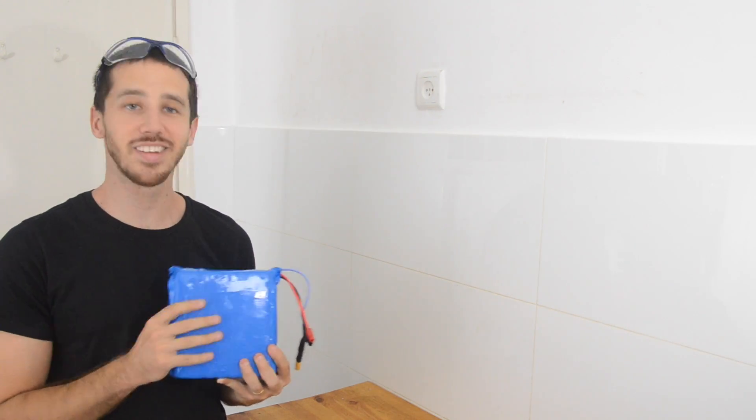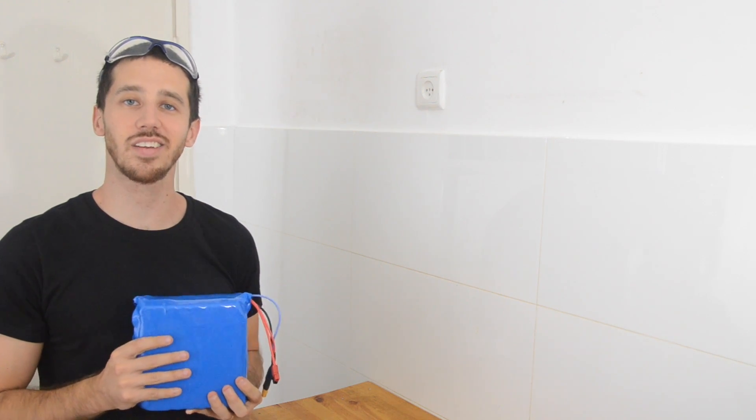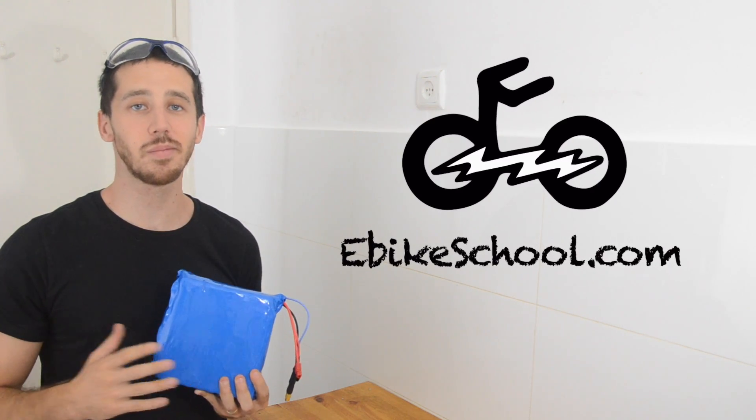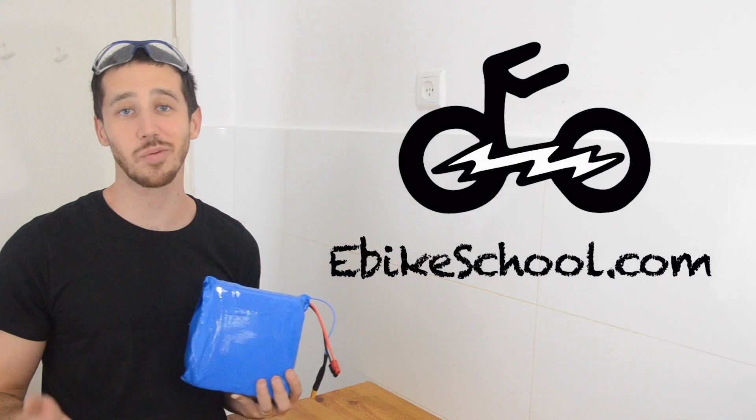And that's it. Now I've got myself a brand new 36 volt 20 amp hour battery. It's that easy. Thank you guys for watching, and thanks for checking out ebikeschool.com. And I'll see you back here next time for another hopefully interesting video.